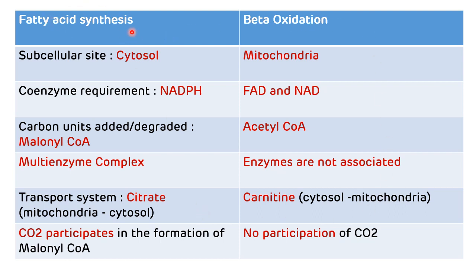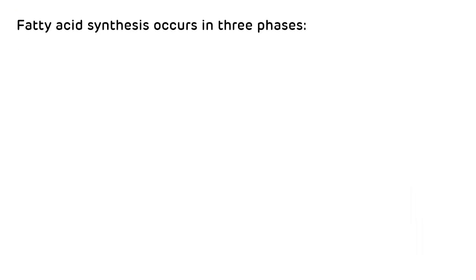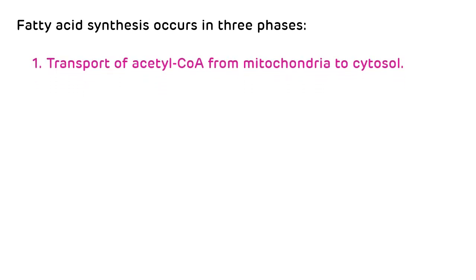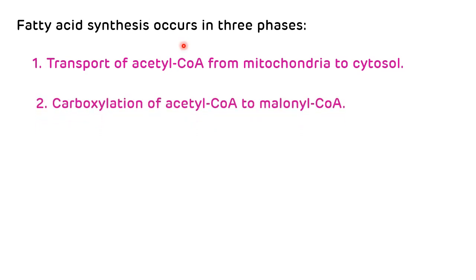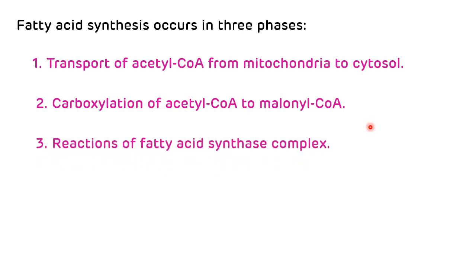These differences confirm that fatty acid synthesis is not a reversal of beta-oxidation. There are three main phases in de novo fatty acid synthesis: the first phase is the transport of acetyl-CoA from mitochondria to the cytosol; the second phase is the carboxylation of acetyl-CoA to synthesize malonyl-CoA, which is the rate-limiting step; and the third phase is the reactions carried out by the fatty acid synthase complex.